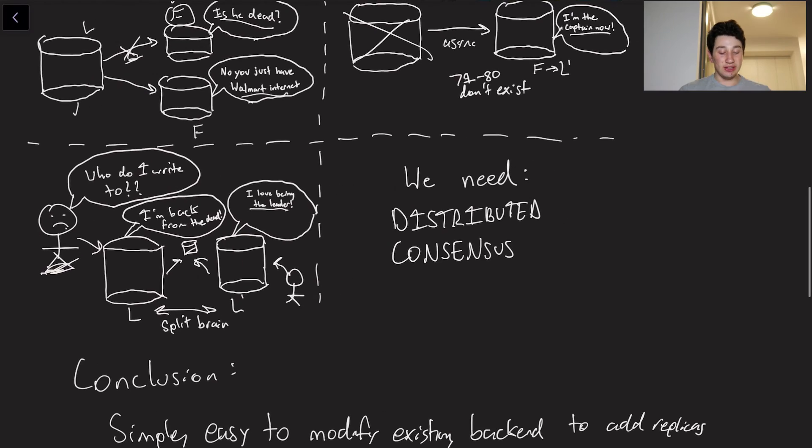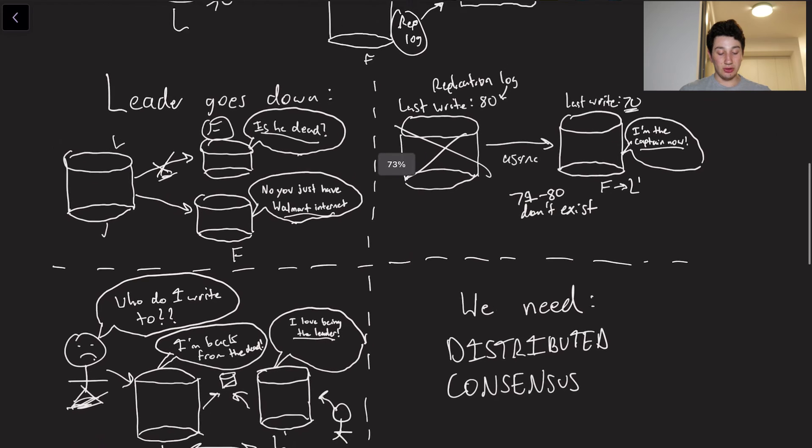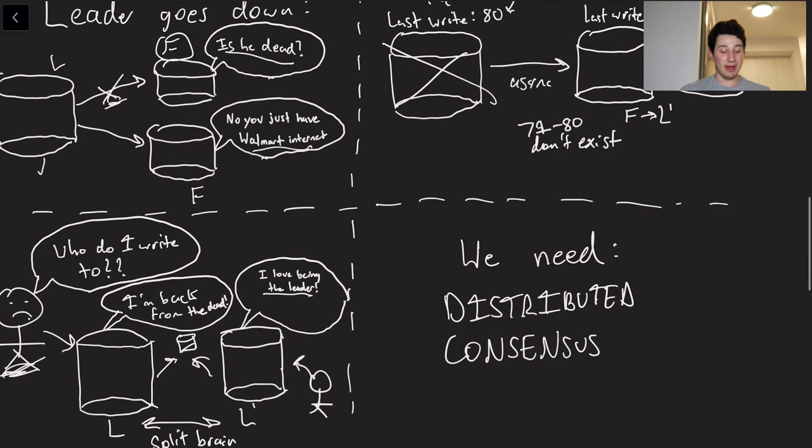So as you can see, clearly having a leader that does go down is a massively problematic situation. And truthfully, due to the fact that there's no guarantees on when a network message is going to get from a leader to a follower or a follower back to a leader, or from a follower to a follower, it's really hard to say I know for sure that this leader is down and I know for sure that this node is the leader.